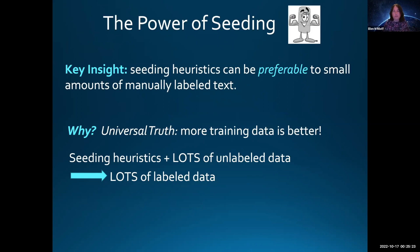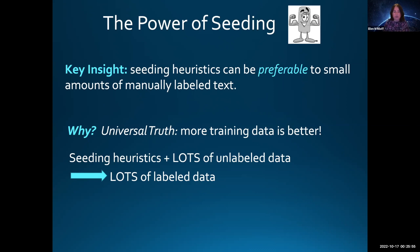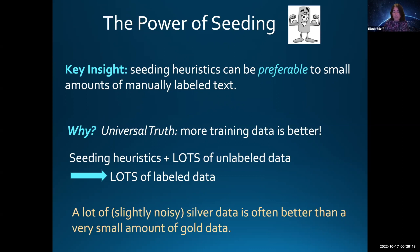The key point about seeding heuristics is that they can, in some cases, be preferable to small amounts of gold data. This corresponds to what I think of as a mostly universal truth: more training data is better. With seeding heuristics, there's the opportunity to get really large amounts of training data. If you can come up with a good seeding heuristic and you have lots of unannotated text, you can automatically label lots of the unlabeled text and end up with a lot of silver data for training—even if it's a little noisy.